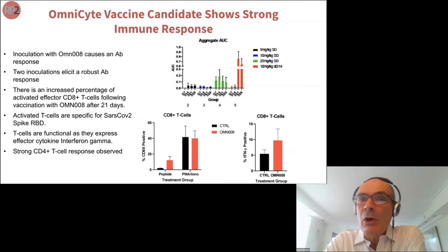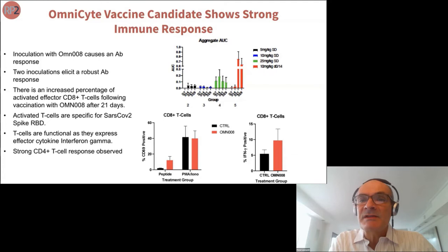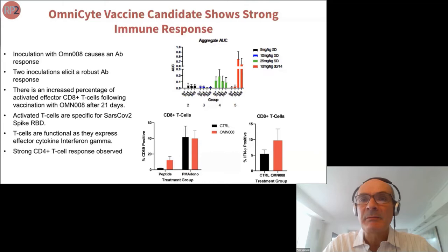At first we didn't know if this would work, because our technology is designed to activate a T cell response against tumors. The most important results are shown in the top chart, where we looked at the antibody response. You can see a dose-dependent response of antibody titers — black, blue, to green — showing that as concentration goes up, the antibody response goes up. More strikingly, using a smaller dose but two vaccinations, we see a very robust antibody response to the virus.